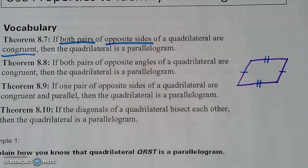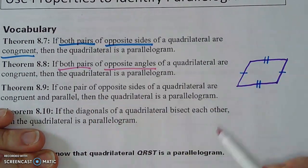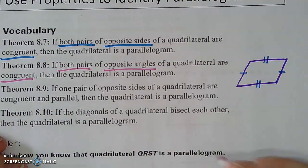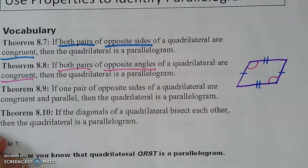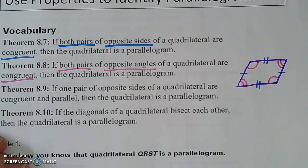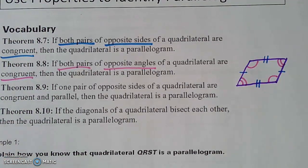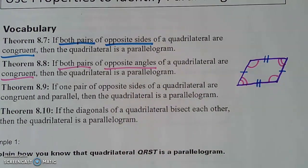The second theorem, 8.8, if both pairs of opposite angles of a quadrilateral are congruent, so that means if this angle and this angle are congruent, and this angle and this angle are congruent, look at how I've utilized the loops, it's kind of the same way I utilize the tick marks, but if we're seeing those opposite angles are congruent, then it is a parallelogram.